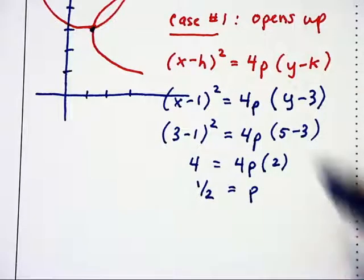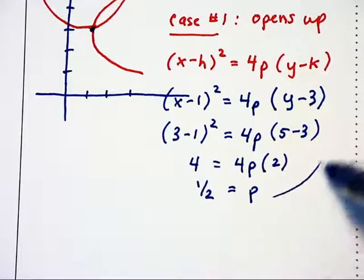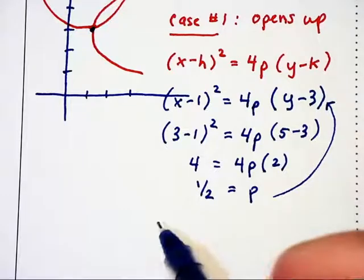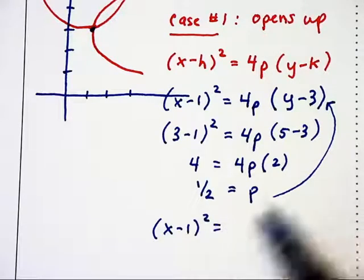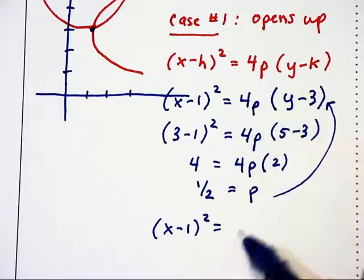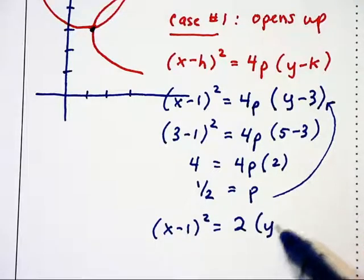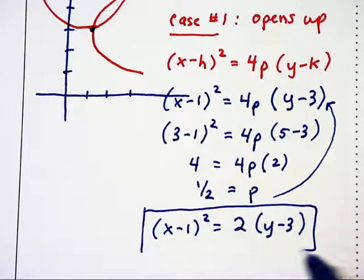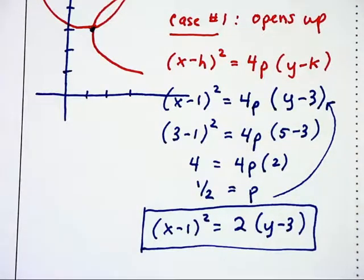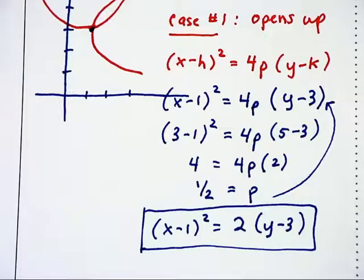So substituting that back into the equation we have up above, this equation becomes x minus 1 squared equals 4 times 1 half, which is 2, times y minus 3. So that there is one possible parabola that can go through that vertex and through that point.